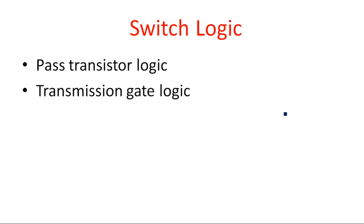In this video you are going to learn about switch logic and gate logic. These are the two different logic functions used to generate different types of CMOS logic circuitry. Switch logic you might have already seen in the form of pass transistor logic. Another form is the transmission gate. These two are commonly known as switch logic, used to create different types of logic functions like AND, OR, NOR gates.